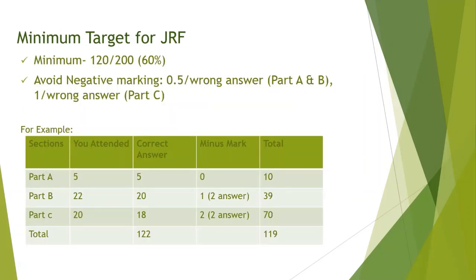The next important thing is having an idea about the minimum marks required to clear JRF. The minimum mark required is 120 out of 200, that is 60 percentage. But this 60 percentage is not a fixed mark — it will vary every year, so this is an approximate mark only. It is very important to avoid negative marking: 0.5 for every wrong answer in Part A and Part B, and 1 mark for every wrong answer in Part C.